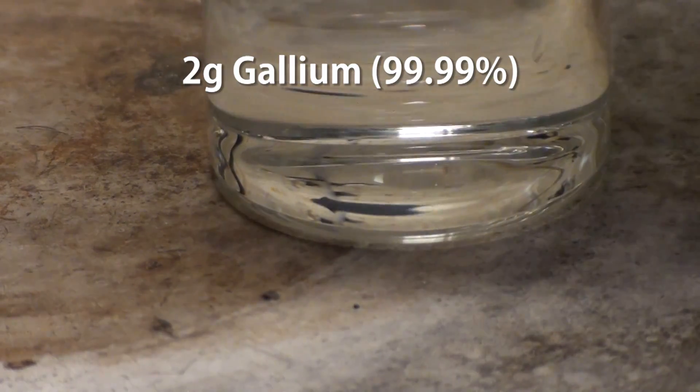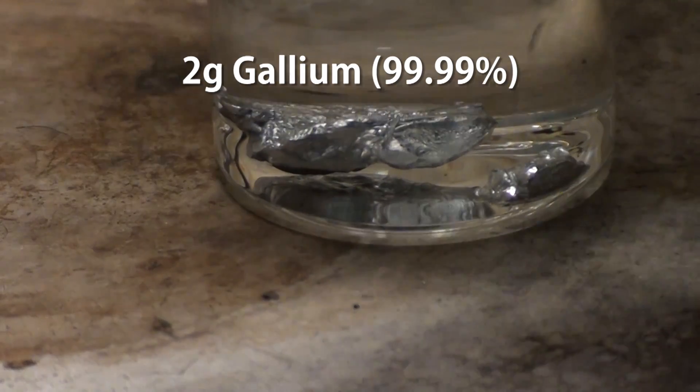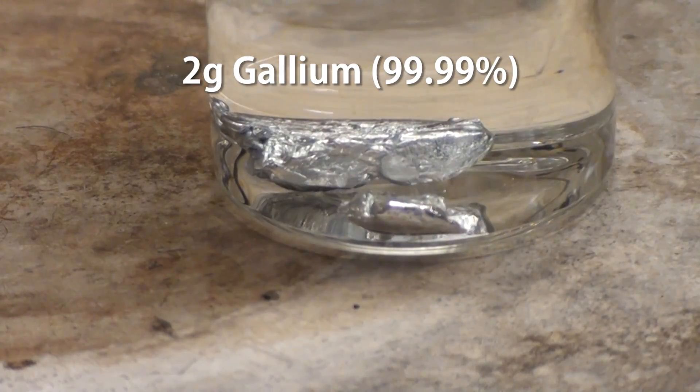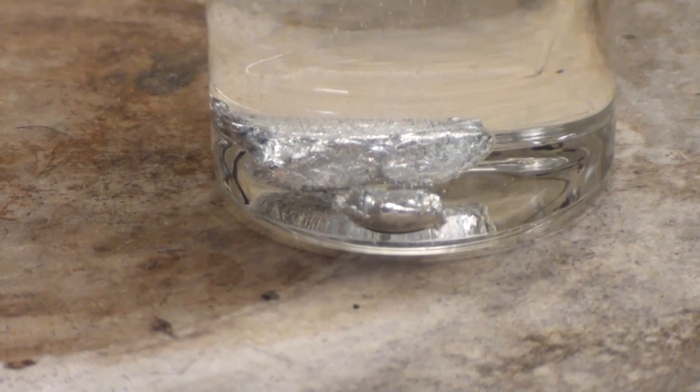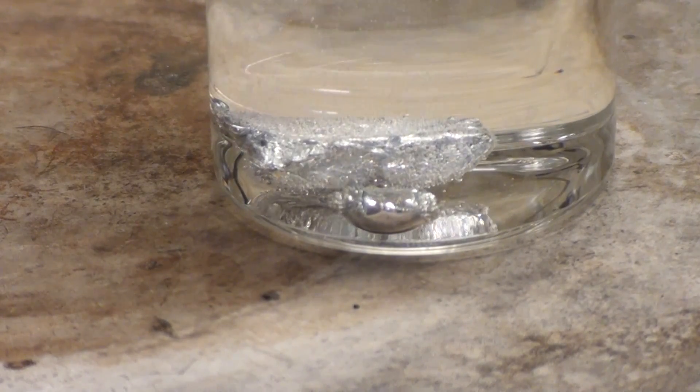Now we put in about 2g of pure solid gallium metal and heat the solution to about 50 degrees celsius. Don't use too much gallium or it'll be too heavy and flat out completely on its own, ruining the experiment.